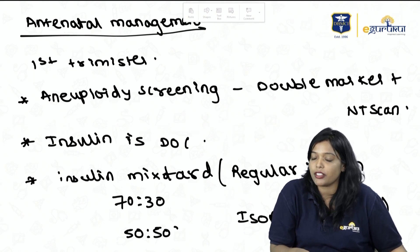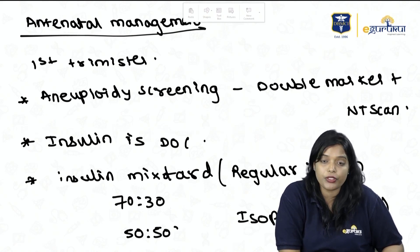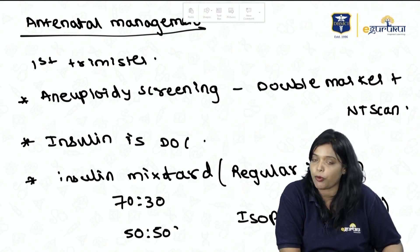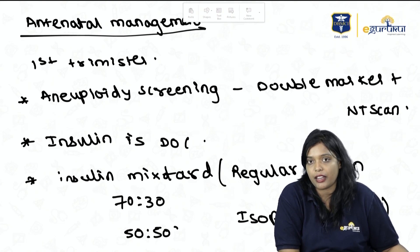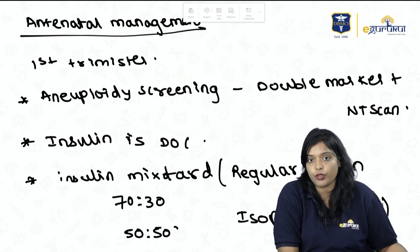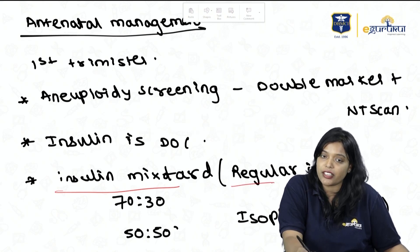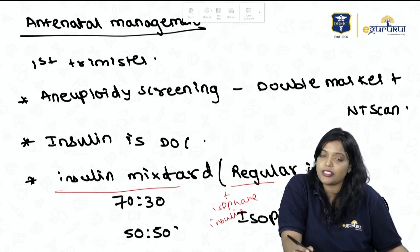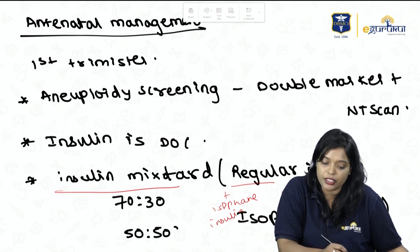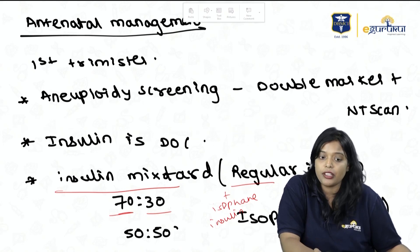For antenatal management of Overt DM in the first trimester, as patients are prone to many disorders, aneuploid screening is done with double marker plus NT scan. Insulin is the drug of choice. You can use mixed insulin — regular insulin plus isophane insulin — in combinations of 70:30 or 50:50.